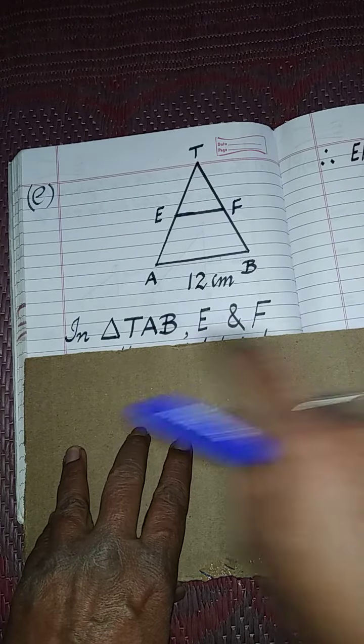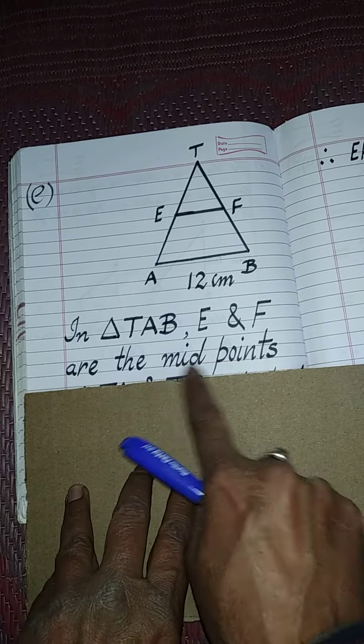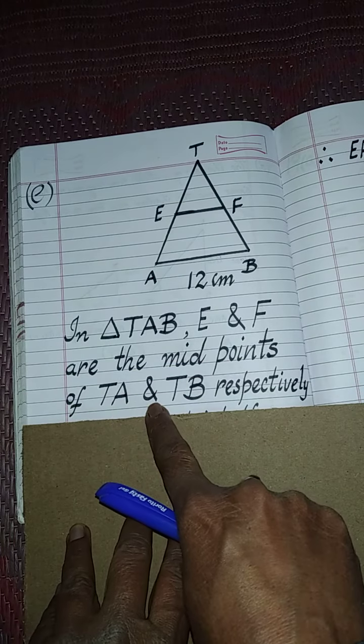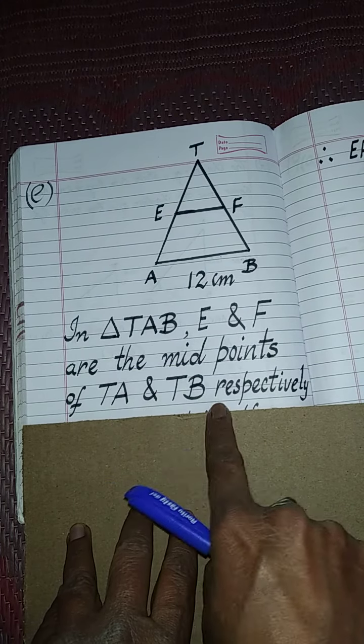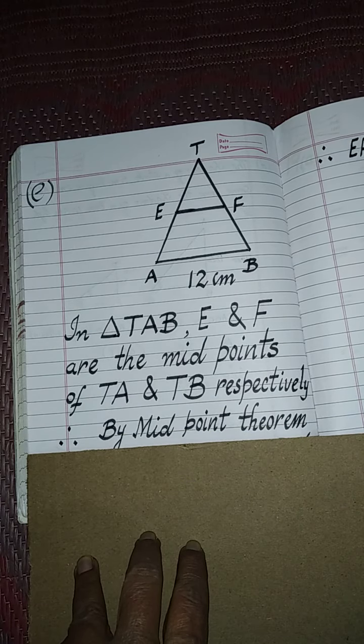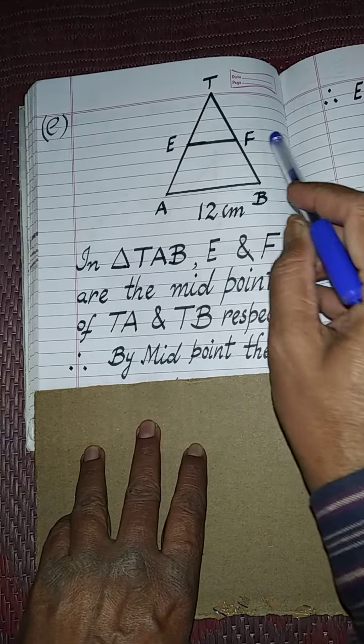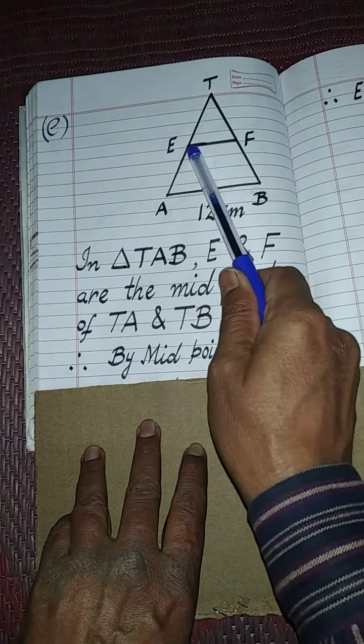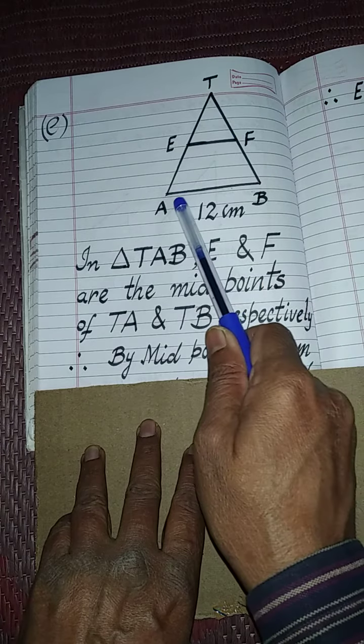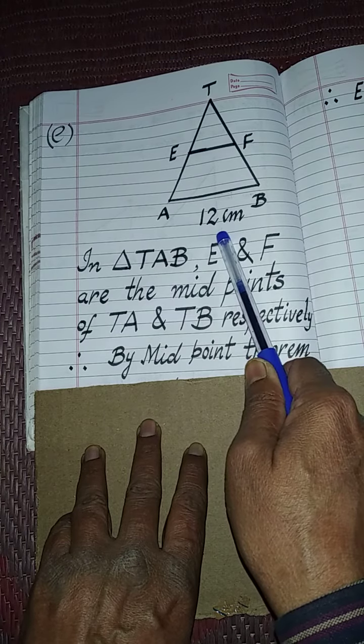Now in triangle TAB, E and F are the midpoints of TA and TB respectively. Therefore, by midpoint theorem which we studied in 9th class, if we join the midpoints of any two sides of a triangle, then that line segment will be parallel to third side and half of third side also.